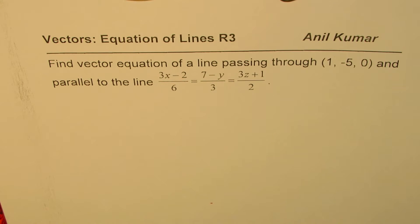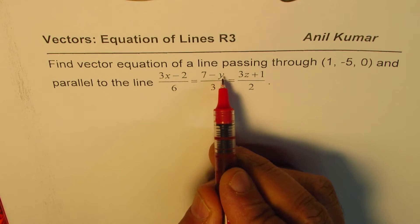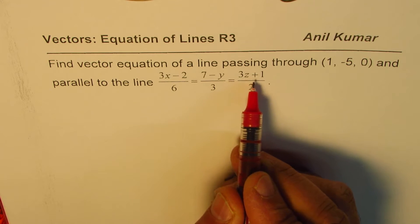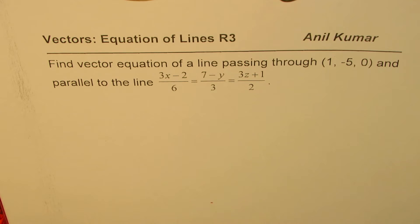I'm Anil Kumar. We are exploring equations of lines in R3. The question here is find vector equation of a line passing through (1, -5, 0) and parallel to the line (3x - 2)/6 = (7 - y)/3 = (3z + 1)/2.